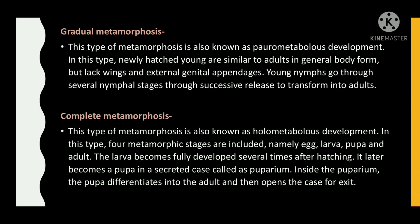Complete metamorphosis: this type is also known as holometabolous development. In this type, four stages are included: egg, larva, pupa, and adult. The larva becomes fully developed through several instars after hatching. It later becomes a pupa in a secreted case called the puparium. Inside the puparium, the pupa differentiates into the adult and then opens the case to exit.